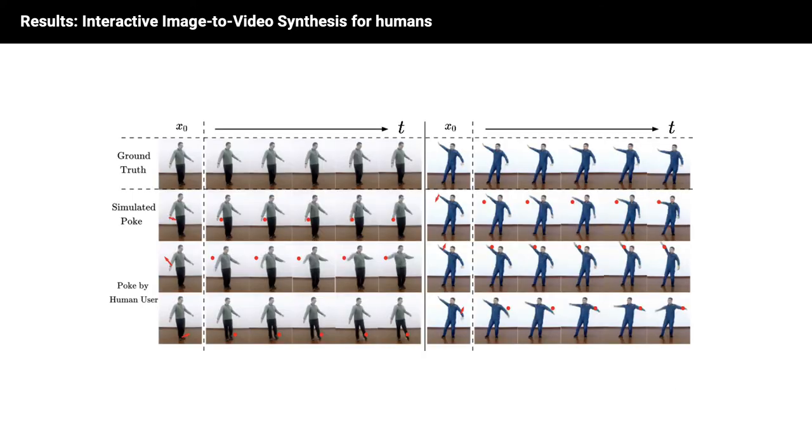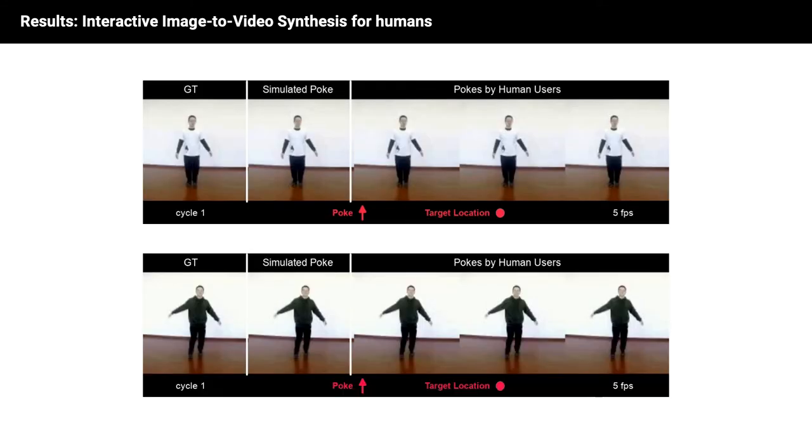Next we evaluate our model on human motion. Here we consider the IPERB dataset, which shows diverse full-body human motion. As our model has learned to capture the interrelation between human body parts, it can also predict human motion in a controlled way, based on still images and pokes.